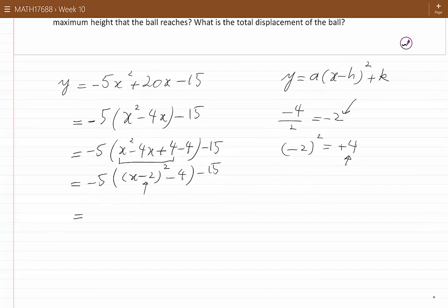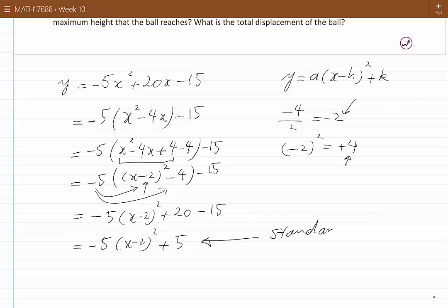Now, we can multiply minus 5 into this bracket to simplify the expression on the right hand side. We would get minus 5(x minus 2) squared plus 20 and we also have a minus 15. This becomes minus 5(x minus 2) squared plus 20 minus 15, which is 5. This is the standard form.